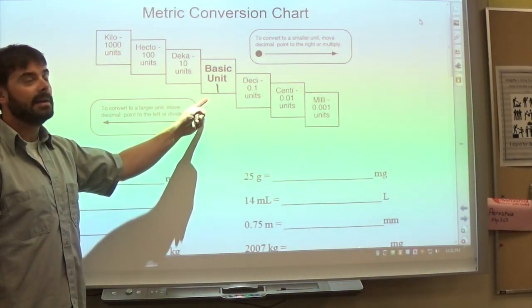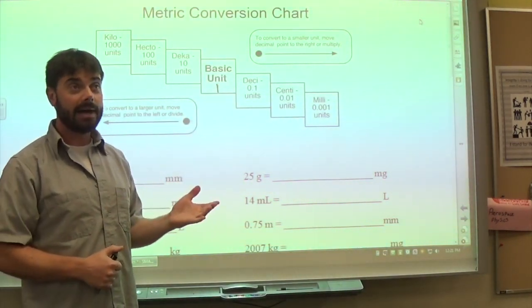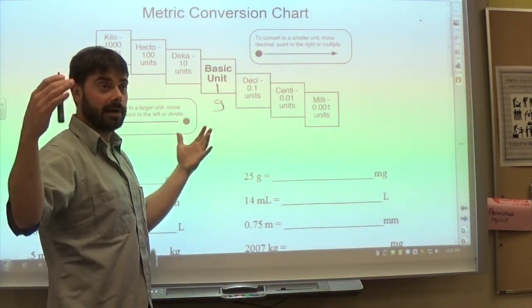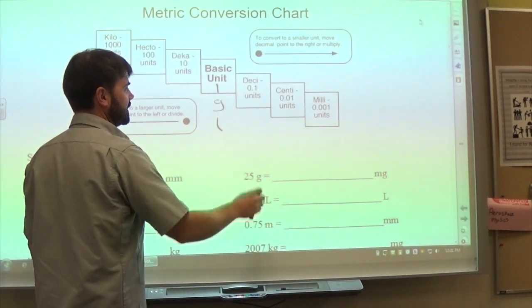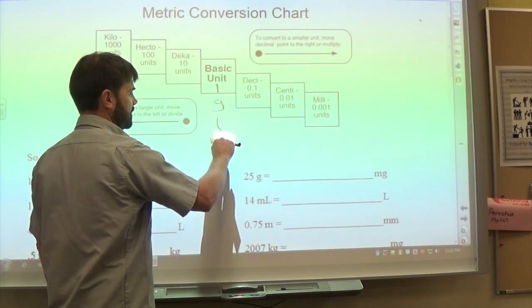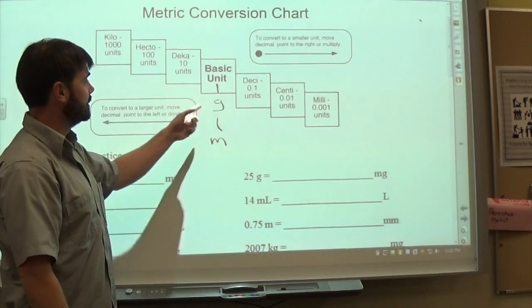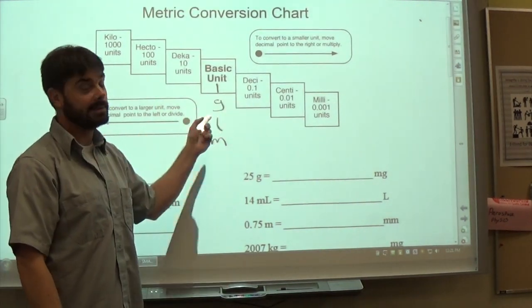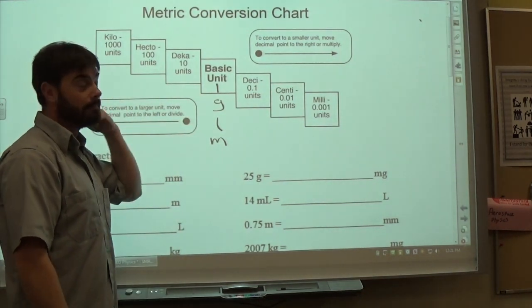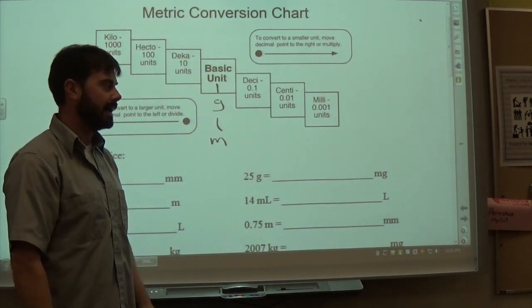The base unit depends on what we're actually measuring. If we're measuring mass, the base unit is a gram. If measuring volume, it's the liter. If measuring distance, we use the meter. You can have any combination of prefixes: kilogram, hectogram, decagram, decigram, centigram, milligram, or kiloliter, hectoliter, decaliter, and so forth. The prefix is basically a multiplier of whatever value you have.